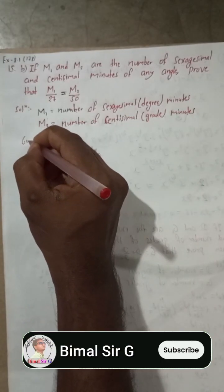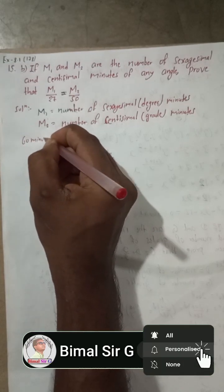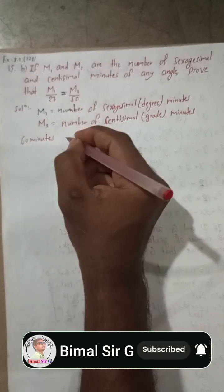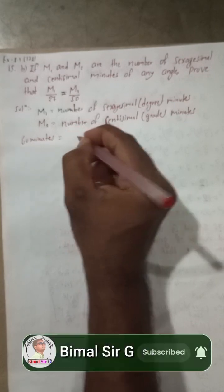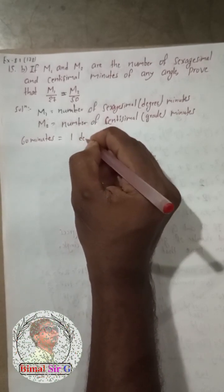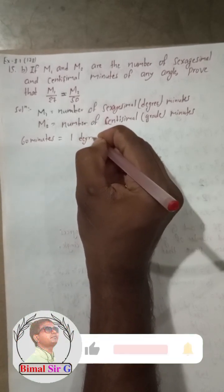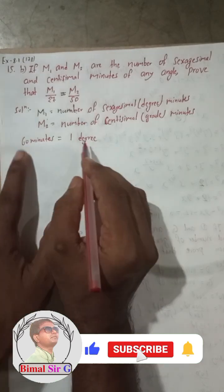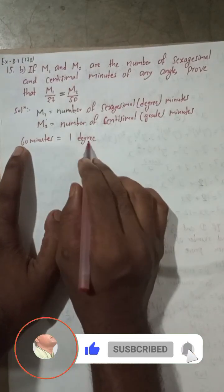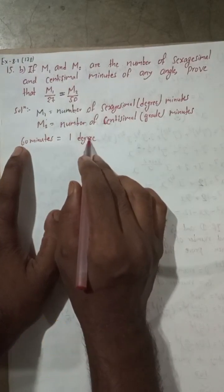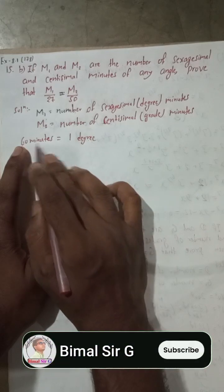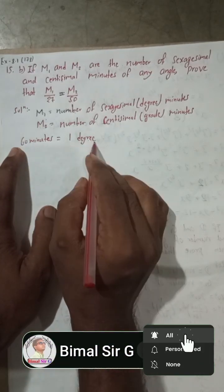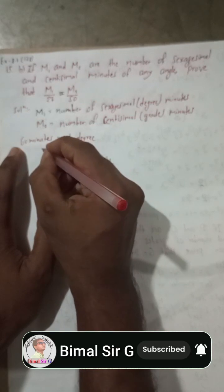Suppose m1 is the number of degree minutes. Then in the degree system, 60 minutes is equal to one degree — this is our formula. In the grade system, 100 minutes will equal one grade.